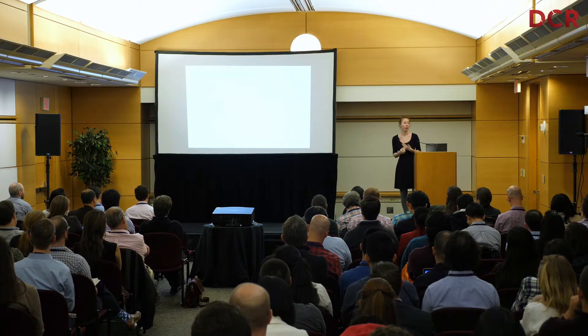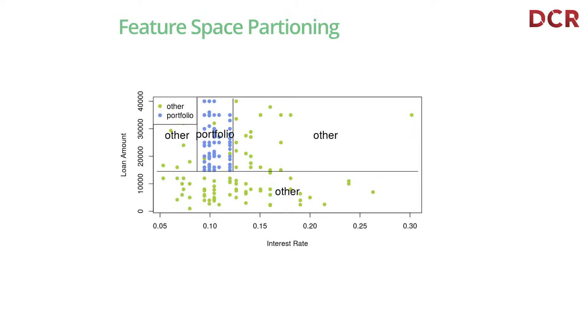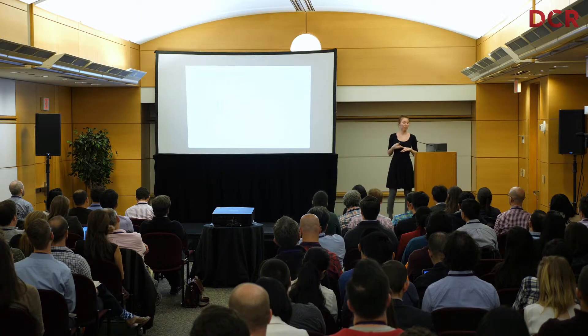A tree in two-dimensional space is really feature space partitioning. First we had the split on loan amount, separating one group; the other needed a bit more work to distinguish. You may notice there are a few green dots in the big blue square. This splitting in decision trees continues either until you have a sufficient number of observations in your end nodes, or other stopping rules apply — sometimes you grow it fully to get very clean end leaves.